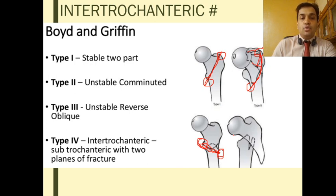Also, Type 4 in Boyd and Griffin is an intertrochanteric fracture with a subtrochanteric extension in more than one plane.